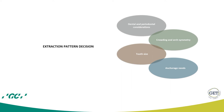Crowding plays a role, but an even bigger role is arch symmetry — meaning you have to achieve sagittal symmetry of the two canines and the two molars at the end of treatment. Sometimes, in order to do this, it may be necessary to extract asymmetrically. Tooth size is very important, remembering that the second premolar in the upper arch tends to be smaller than the first premolar. And finally, consider the anchorage needs.